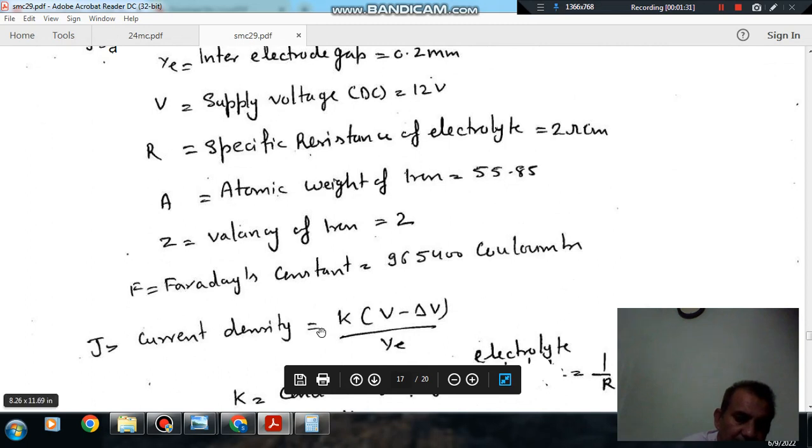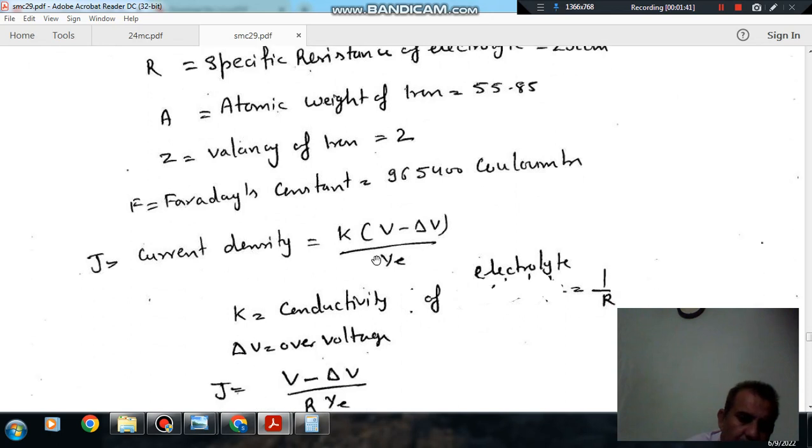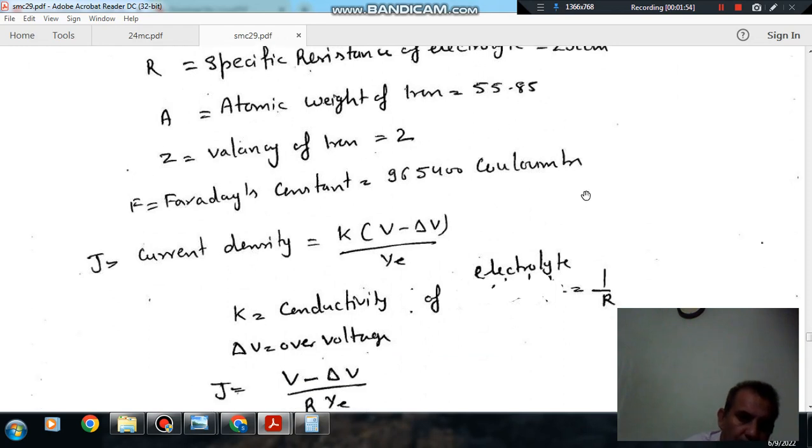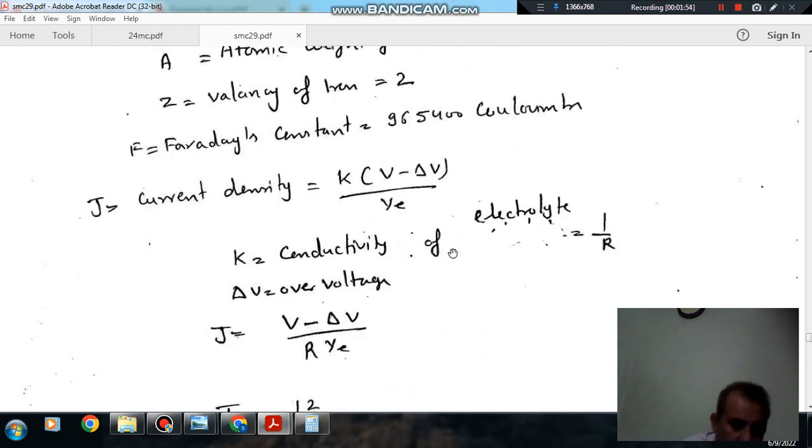So we know that the current density J is K times (V minus delta V) by Y, where V is your voltage applied and delta V is overpotential, Y is inter-electrode gap, and K is conductivity of electrolyte. And conductivity of electrolyte is equal to inverse of specific resistance of electrolyte. That is 1 by R.